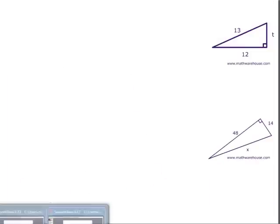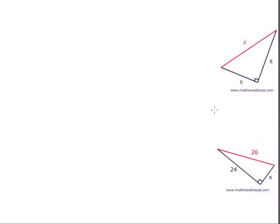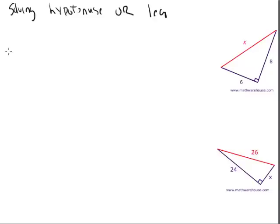Let's try two problems. Basically all problems can be broken down into solving for either the hypotenuse or solving for a leg. A leg is the side that's not the hypotenuse. Whether you're solving for the hypotenuse or one of the legs, we follow the same steps. Step one: write the formula — a squared plus b squared equals c squared.